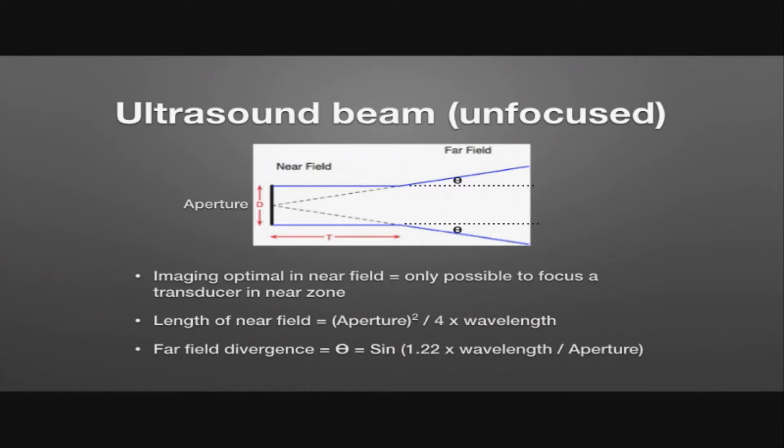Depending on the aperture we can then try and determine what the near field length is, and we can also try and understand what the far field divergence is. And the most important thing to try and understand is that in order to focus the ultrasound beam, we can only do that in the near field. So that's why it becomes very important to try and know the length of this, because that's the area that we're going to be able to improve our resolution when we actually get down to focusing.